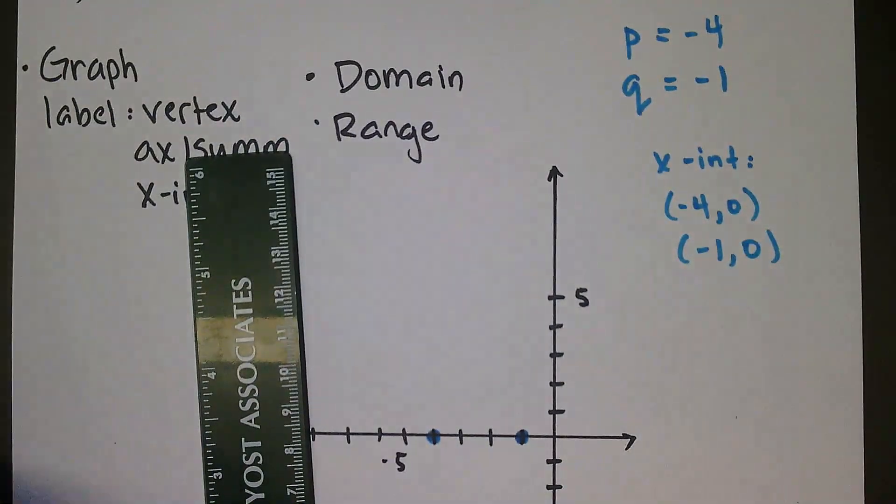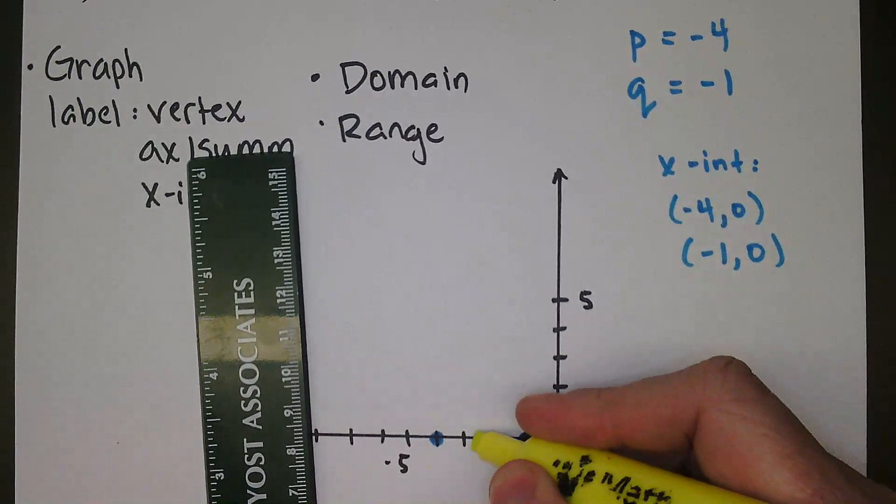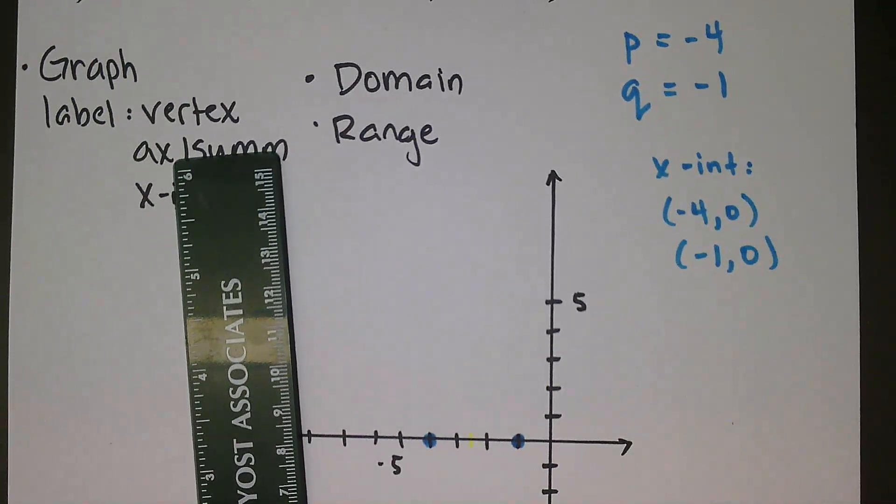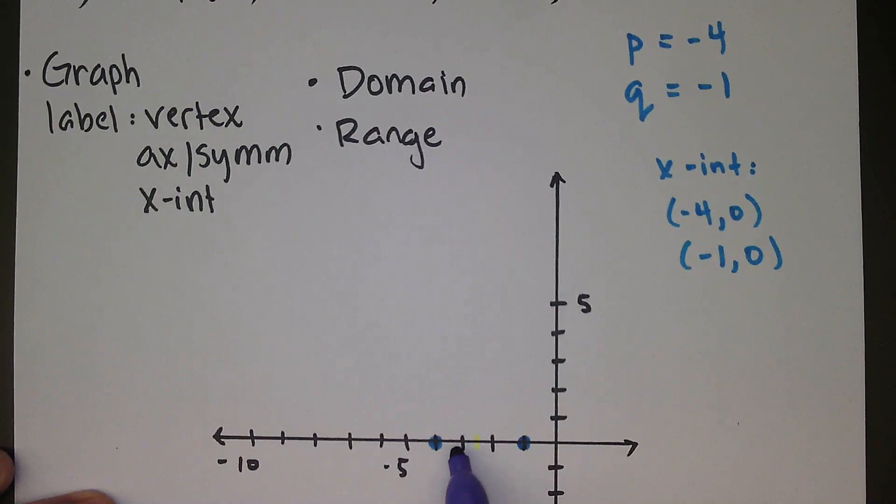It's fairly easy to tell here that it's going to be right about there. It's three units wide, so 1½, meaning right about there is where it's going, right down the middle. Unfortunately, that's not a whole number. And let's talk about how to calculate it, so if we don't have the picture right in front of us, we can do it.